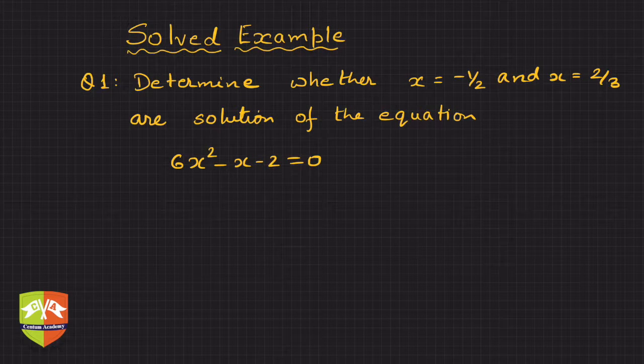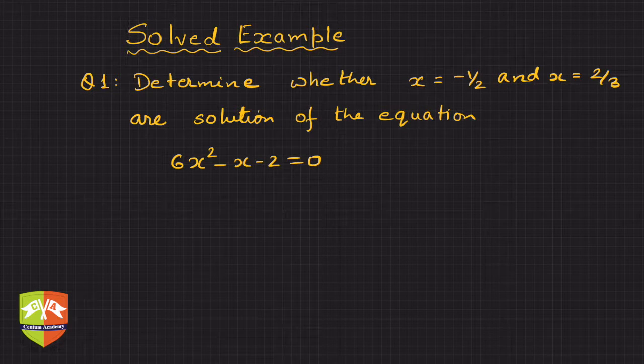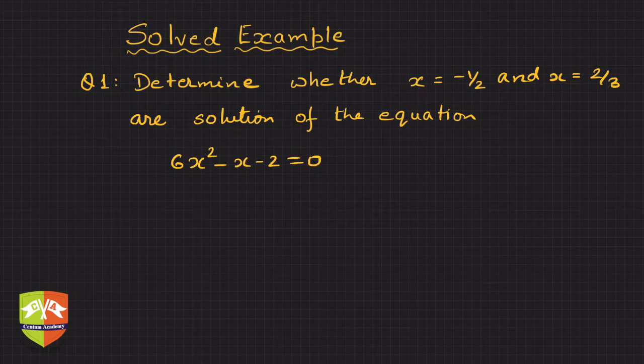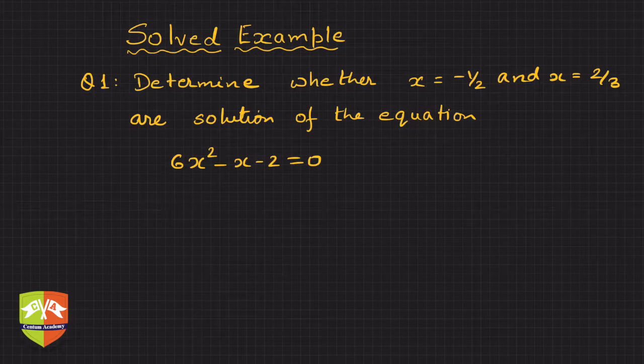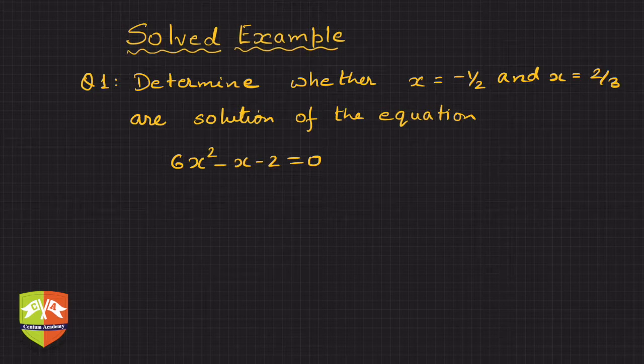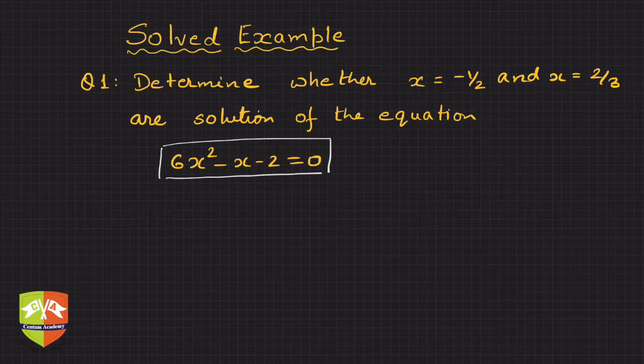Welcome friends, let's take an example and try to solve it. In this question, we are asked to determine whether x = -1/2 and x = 2/3 are solutions of the equation 6x² - x - 2 = 0.